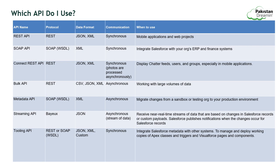Choosing the right API for integration needs is an important decision. The slide shows different APIs along with their protocol, data format, communication type, and when to use each. REST API uses the REST protocol, supports JSON and XML, is synchronous, and is used for mobile and web applications. SOAP API uses the SOAP/WSDL protocol, supports XML only, is synchronous, and is used for integrating Salesforce with ERP and finance systems.